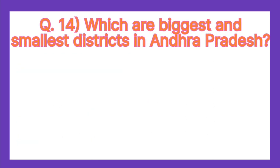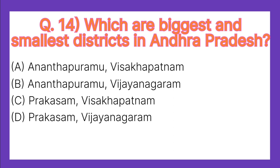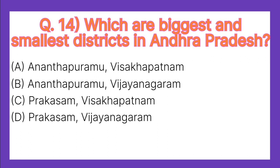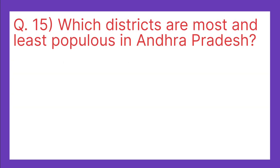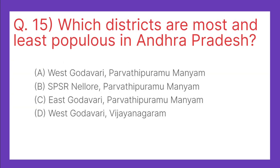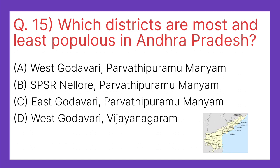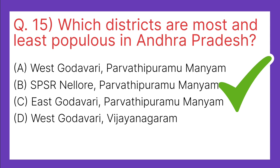Which are the biggest and smallest districts in Andhra Pradesh? The correct answer is C: Prakasam. Which districts are most and least populous in Andhra Pradesh? The correct answer is B: SPSR Nellore and Parvathipuram Manyam.